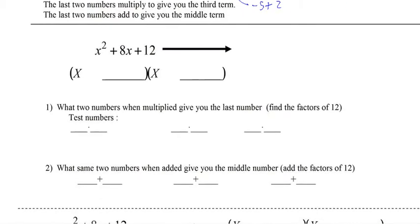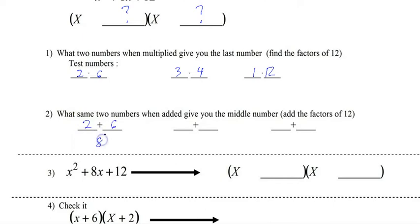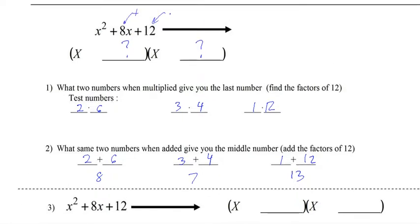So here's our trinomial and we're looking for two numbers that when multiplied give us this number and when added give us this number. First you take the last number which is 12 and you find all of the factors. Then you take those factors and you add them up. If any of them add up to give you the middle term, we know we have our answer and it's right here, 2 and 6.